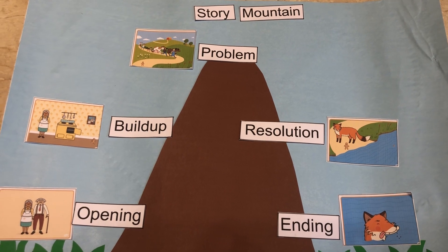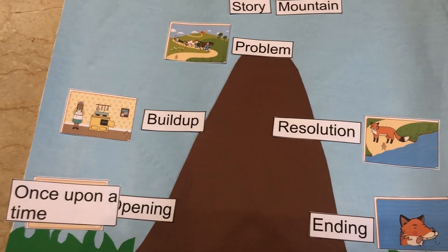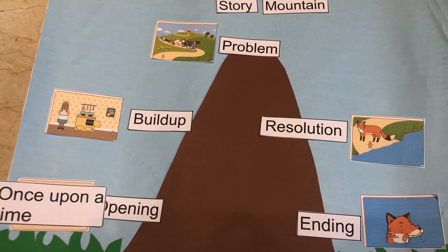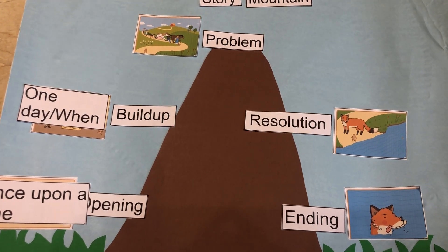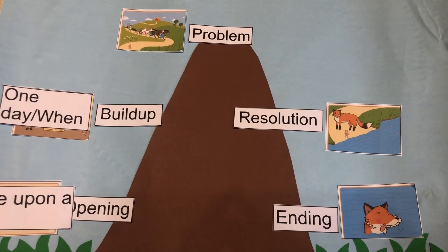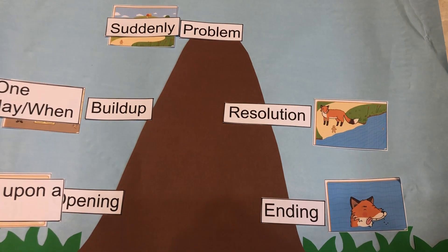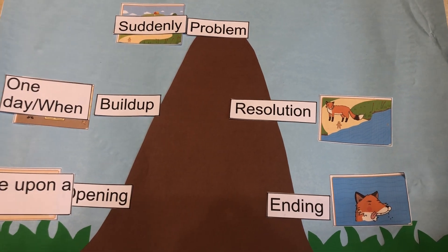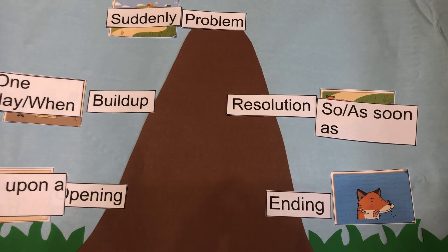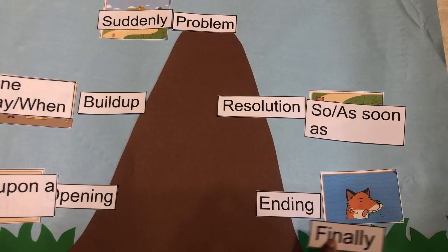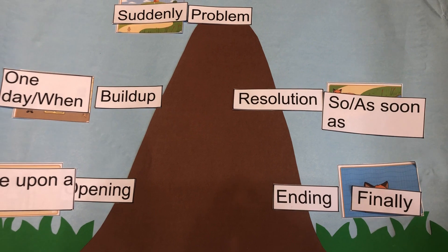For example, connectives such as: once upon a time, one day, or when — to open the story; then suddenly, so, as soon as — to signal key moments; and finally — to signal the ending.